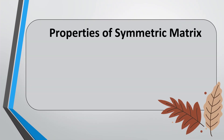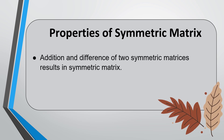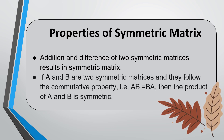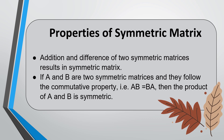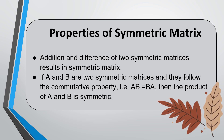Properties of symmetric matrix. First, addition and difference of two symmetric matrices results in a symmetric matrix. Second, if A and B are two symmetric matrices and they follow the commutative property — that is, AB equals BA — then the product of A and B is symmetric. Third, if matrix A is symmetric, then A to the power N is also symmetric, where N is an integer.